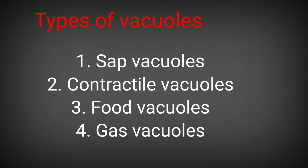Some vacuoles are called contractile vacuoles, generally found in freshwater protozoans. They appear and disappear at intervals to get rid of excess water from the hypotonic environment, and that enables movement of the protozoans or aids digestion. Then there are food vacuoles, found in some protozoan protists and lower animals such as sponges, which contain food particles stored in the vacuoles.